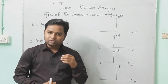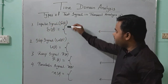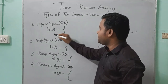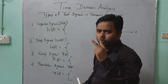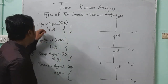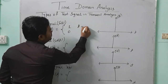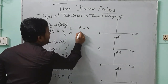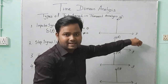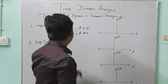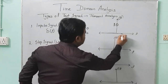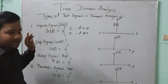Now we will study the types of transient signals. The first one is the impulse signal, denoted by δ(T). The value of δ(T) is equal to 1 when time T is equal to 0, and δ(T) is equal to 0 when time T is not equal to 0. If we plot this on a graph with T on the x-axis and C of T on the y-axis, at T equal to 0 the signal is 1, and at all other points the signal is 0. This is the graph for a unit impulse signal.